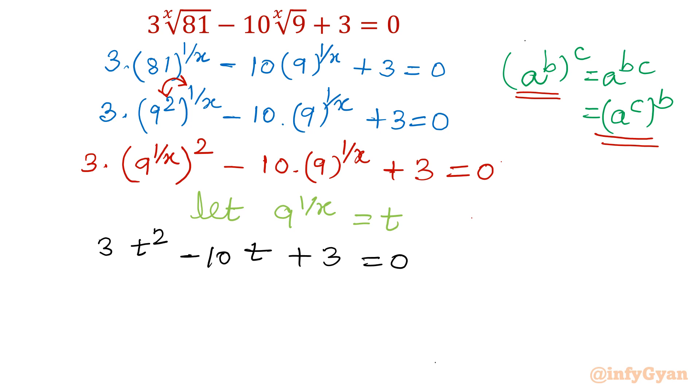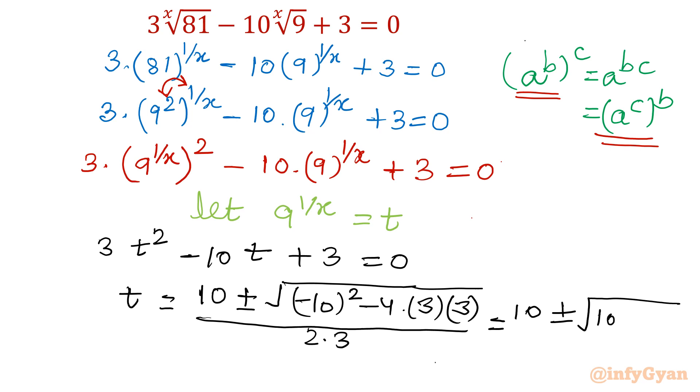This is one quadratic equation in t. I will use quadratic formula. So t is equal to minus b, which is 10, plus minus square root of 100 minus 4 times 3 times 3, which is 36, divided by 2 times 3. So I can write 10 plus minus square root of 64 divided by 6.